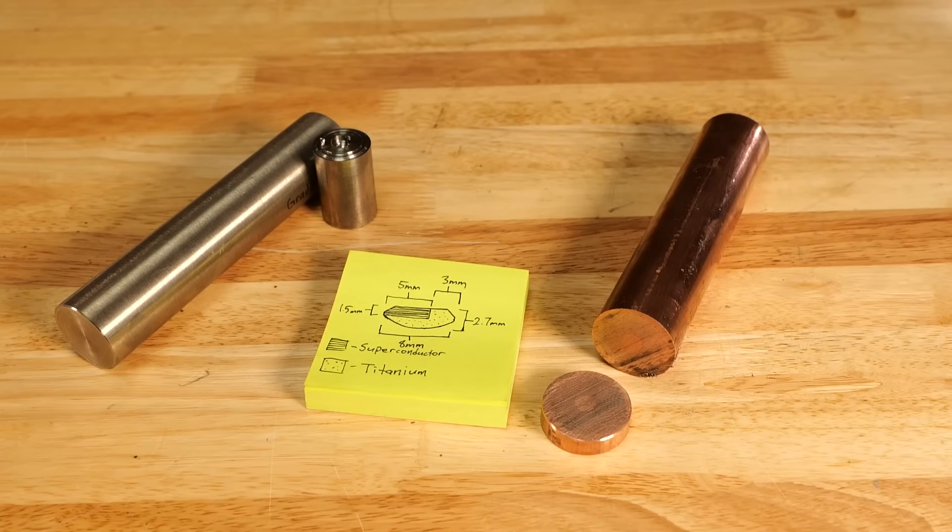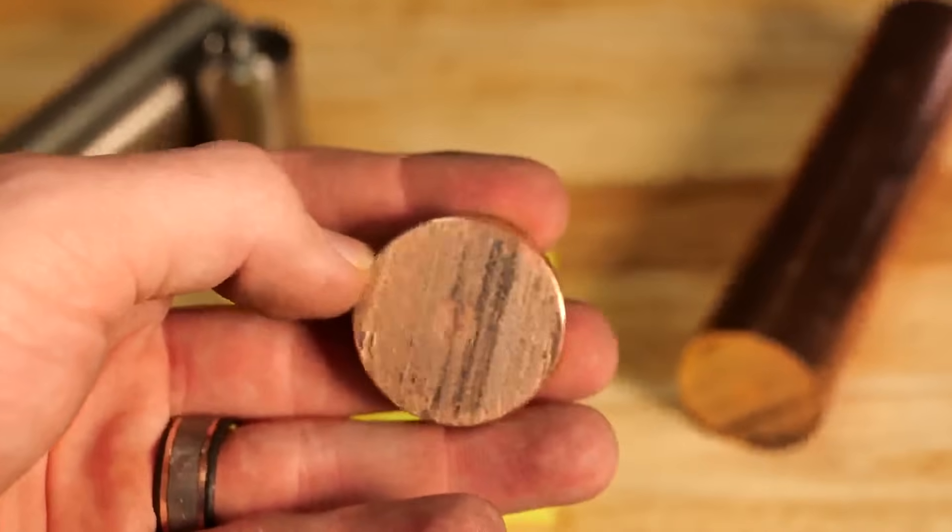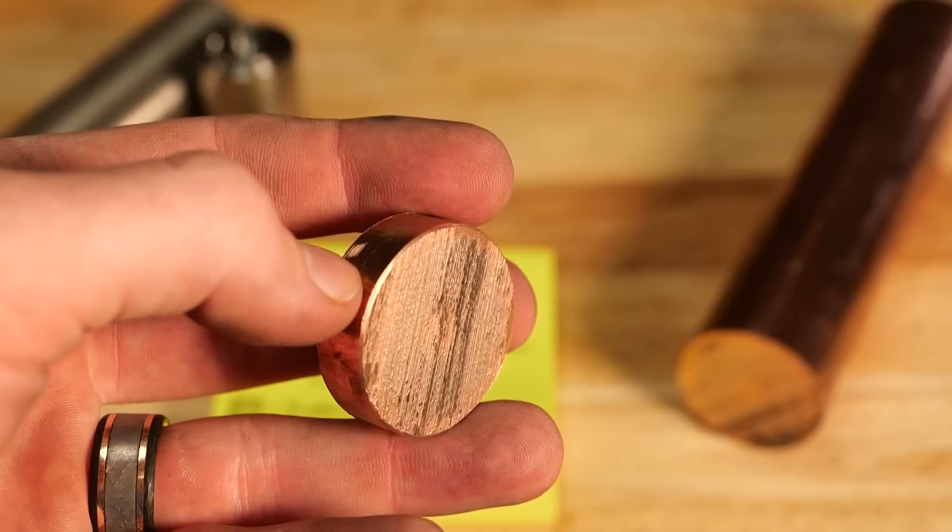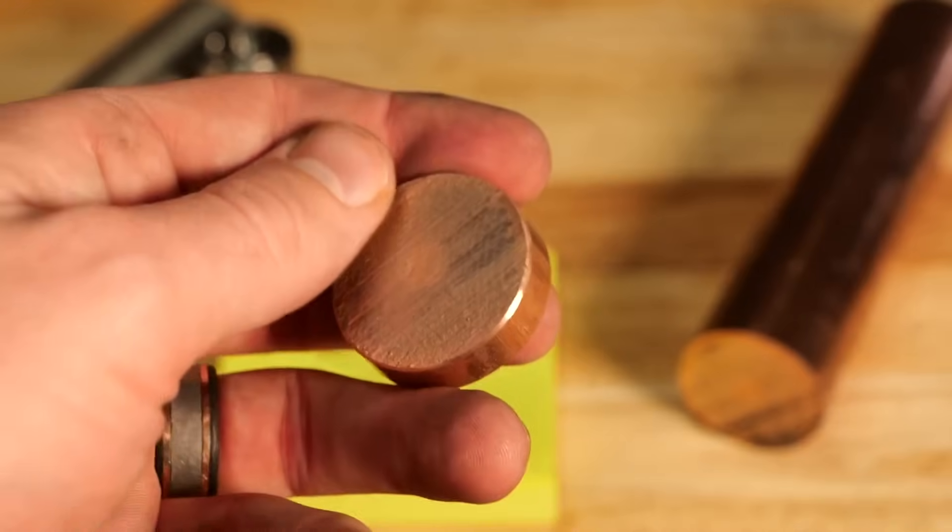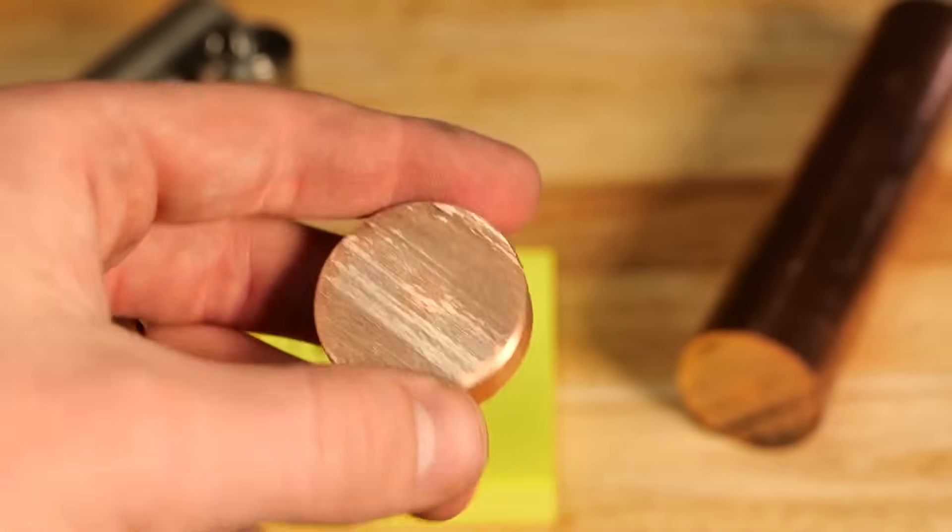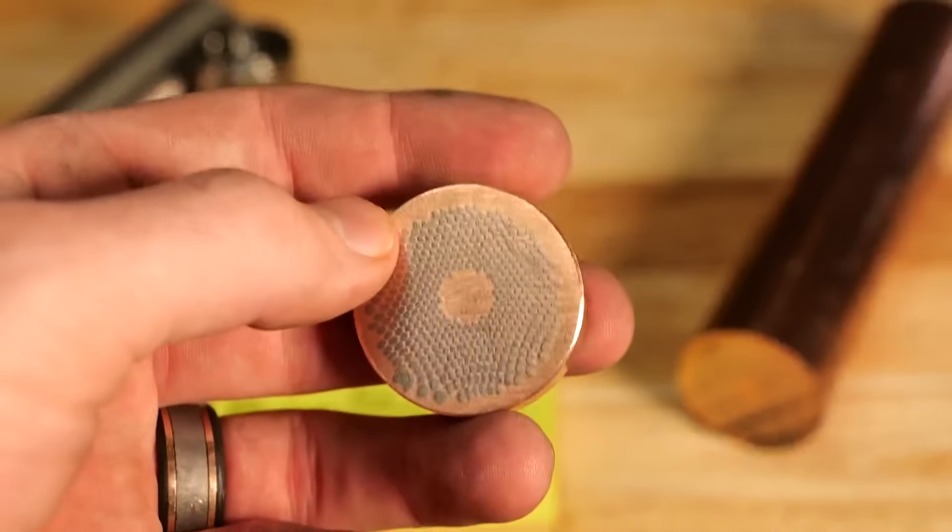All right, we're ready to move on to the next steps. But as promised, let's talk about the superconductor real quick. So this is what it looks like when it's fresh off the saw. As you can see, there's not much distinction between the materials. But once you sand it, check this out. Boom. So much nicer. You can see a really clear distinction between the materials.